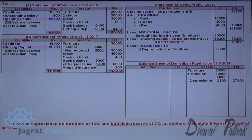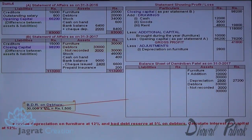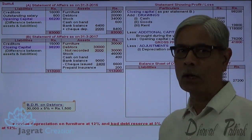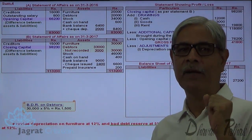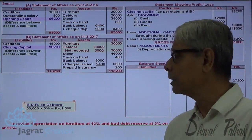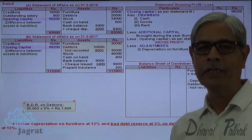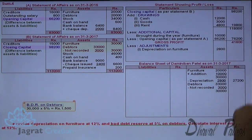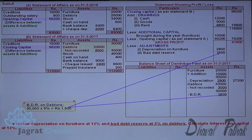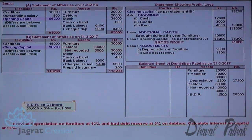Bad debts are to be provided at 5% on debtors of 30,000, so 5% bad debt provision is 1,500. This is a provision for loss on account of bad debts — non-recovery from the customer is identified as a loss known as bad debts. The provision of 1,500 reduces the profit, so gross profit will go down, and the debtors balance appearing in the balance sheet is reduced by 1,500, so 28,500 is identified as the recoverable balance from customers.